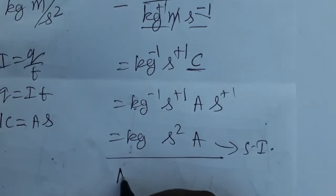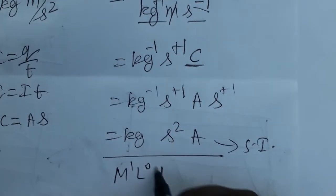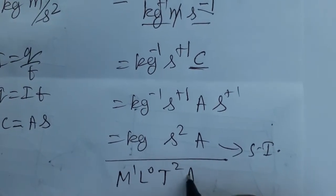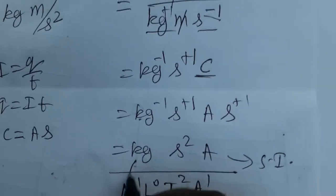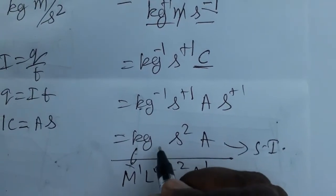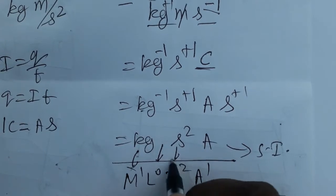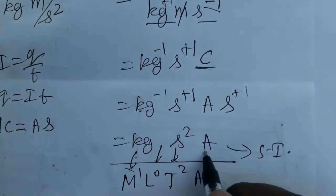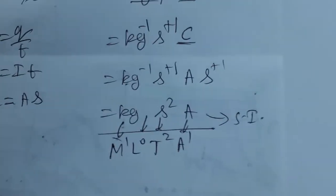In case you want the dimensional formula: M⁻¹, L⁰, T², A¹ — because mass is taken as capital M, length as capital L, time as capital T, and current as capital A (Ampere).